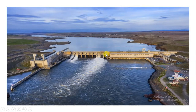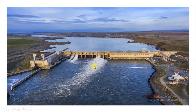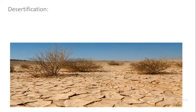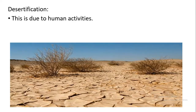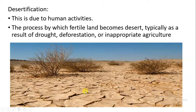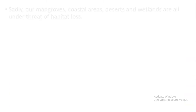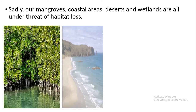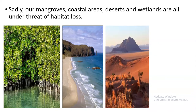If a dam is built on a river, whenever it is opened or closed, the direction of river flow gets changed due to manipulation in dam use. Desertification is also caused by human activities — when land used for agriculture is used inappropriately with excess pesticides and chemicals, the fertility level reduces and it causes desertification.